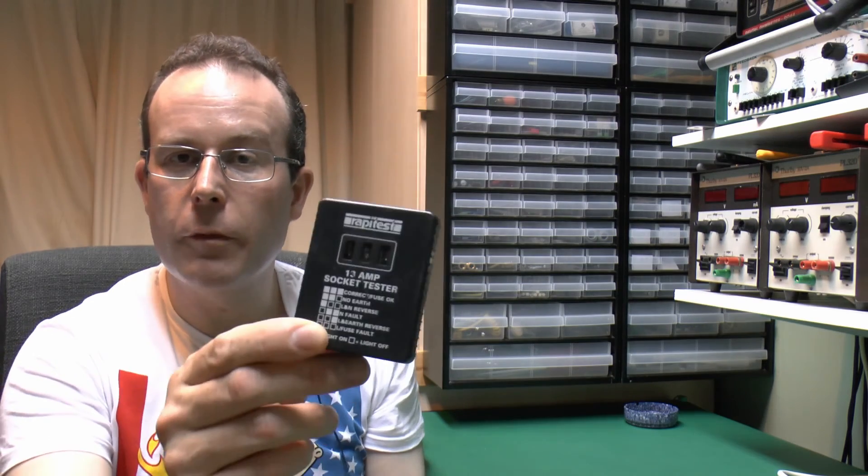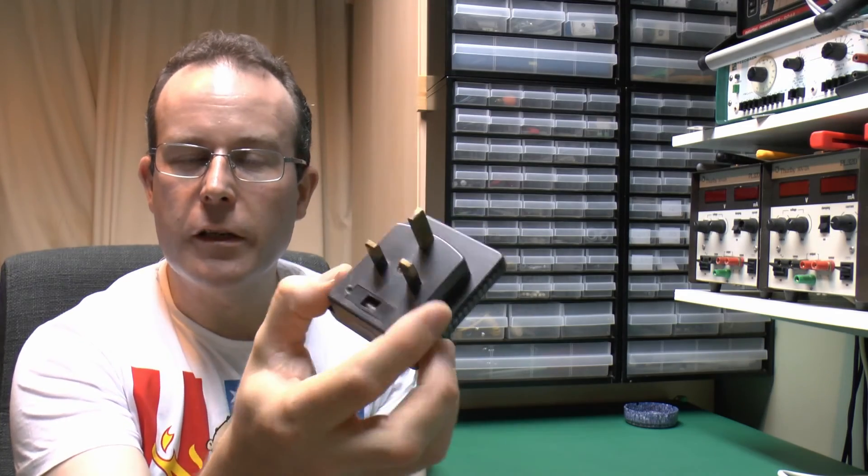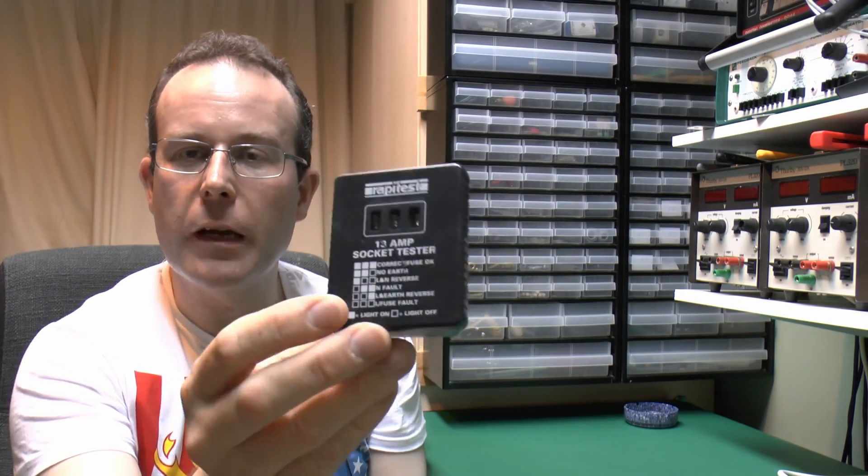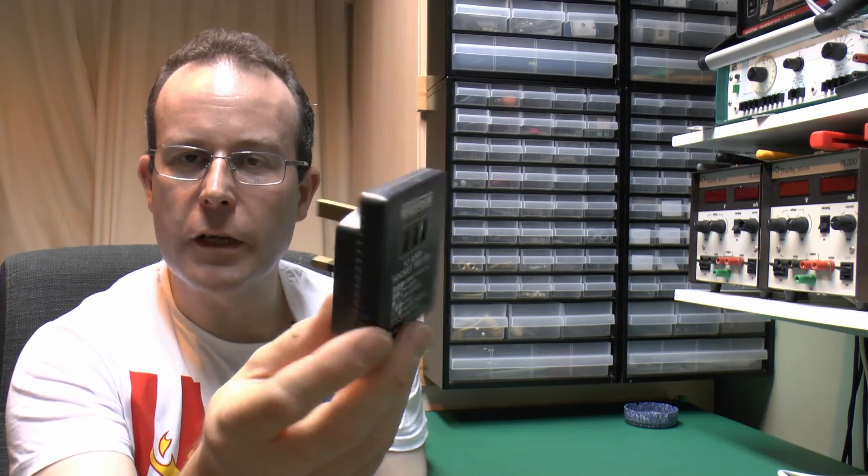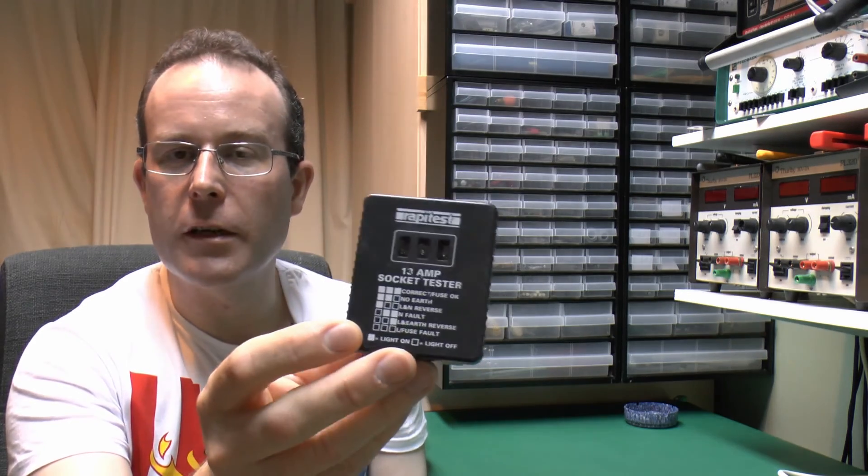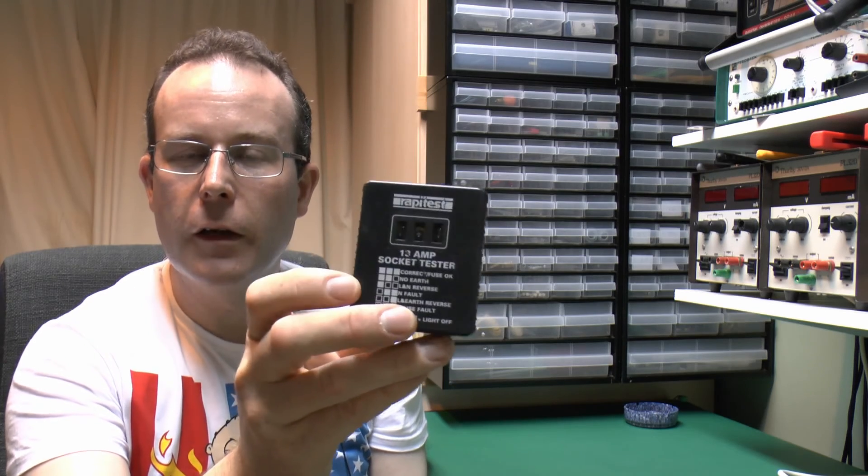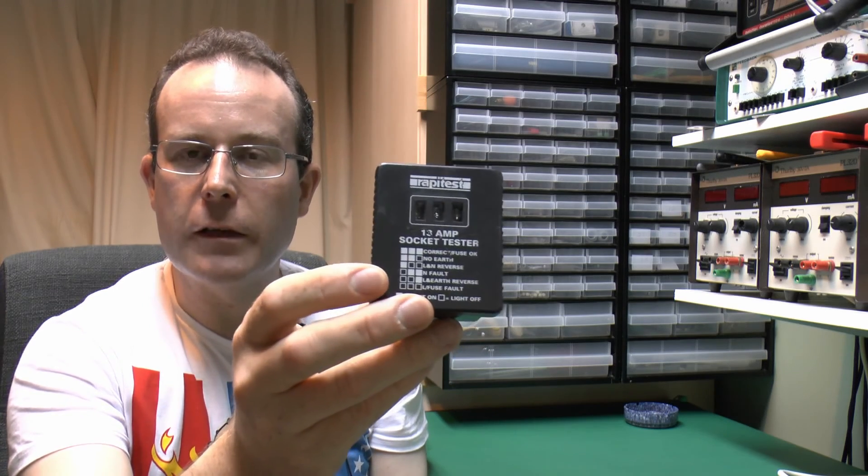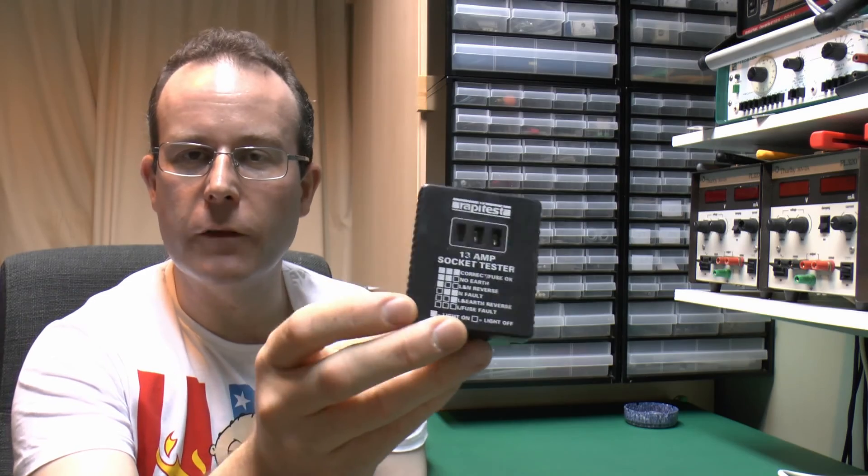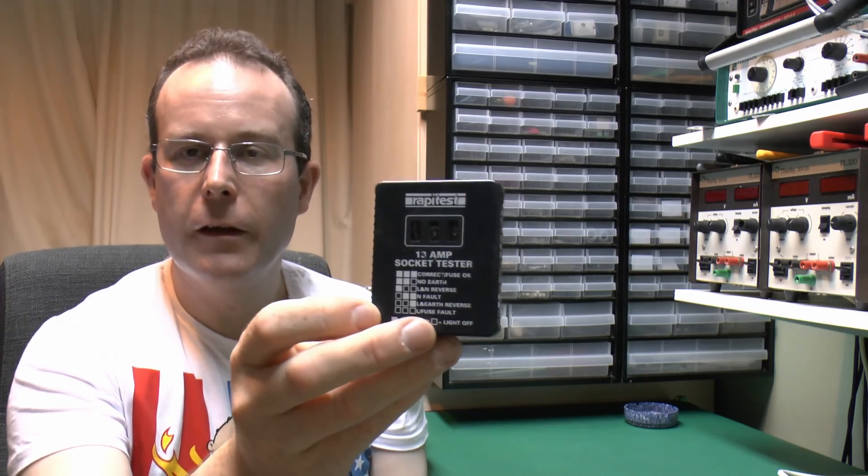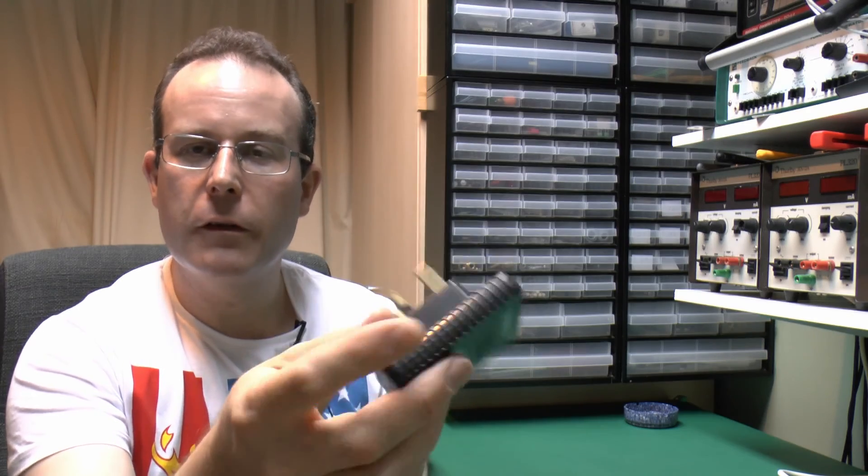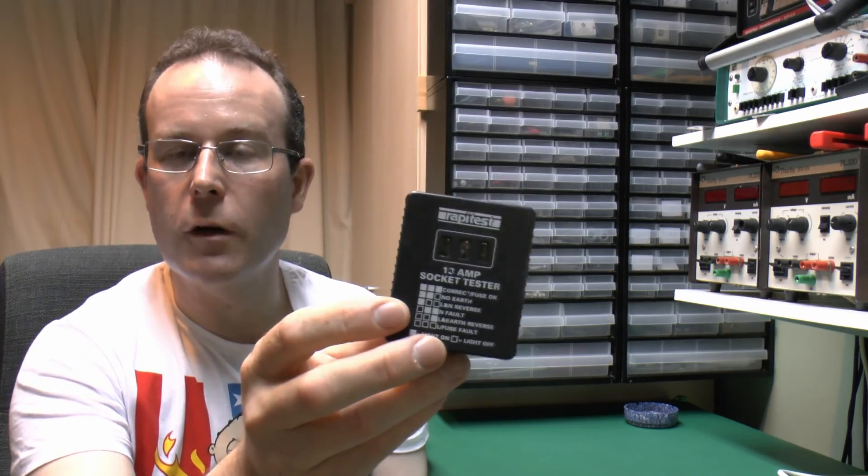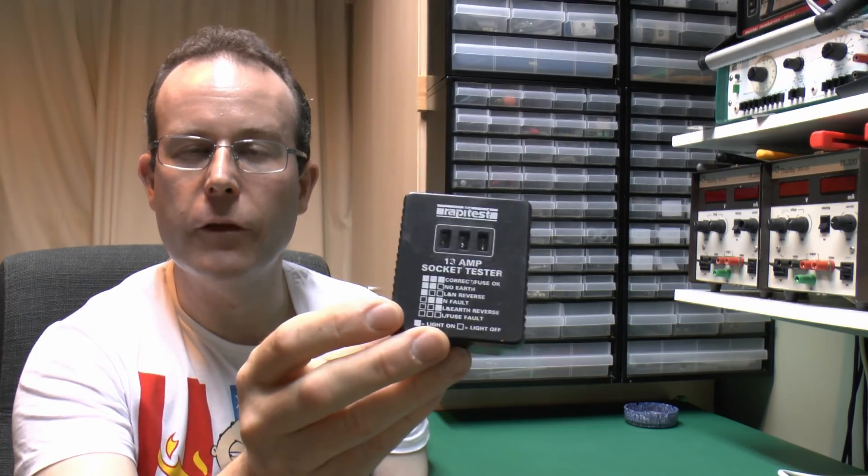So that's the plug-in socket tester, so this is a fairly old one and it's one of the most basic types available, it's literally just those three neon indicators in there. You can get other ones of these which plug in which are somewhat more sophisticated and some include a sort of a little bar graph type thing with the LEDs on the front to give you some indication of the earth impedance, and there's others that have buzzers and things in there as well, but they all have a similar construction and even more sophisticated ones are still quite limited in the information they're going to give you.